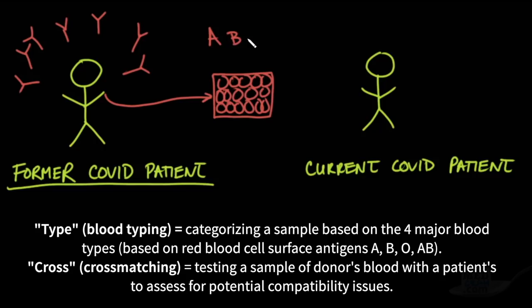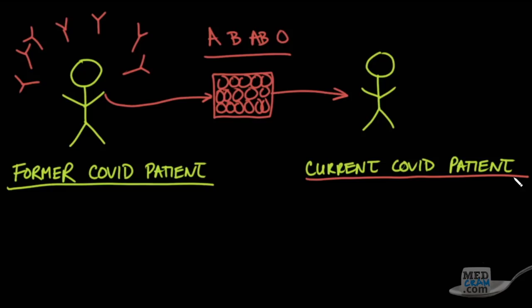You have that patient donate to a blood bank where they store packets of these patients' plasma. You type and cross them, so you know this is A, B, AB, or O. Then you can know what you should be able to transfuse into a current COVID patient. This current COVID patient is trying to mount an immune response, and it takes a while for those antibodies to be formed.